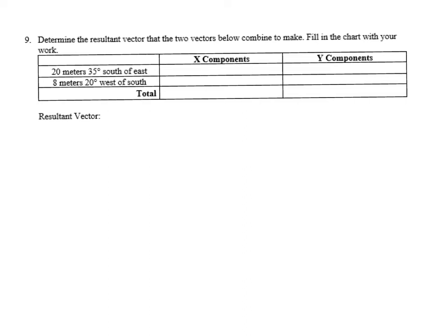Hey y'all, in this video we're going to go over question 9 from your study guide. We're going to determine the resultant vector that these two vectors are going to combine to make. We'll use this chart to help us do that. We have two vectors: one going 20 meters 35 degrees south of east.